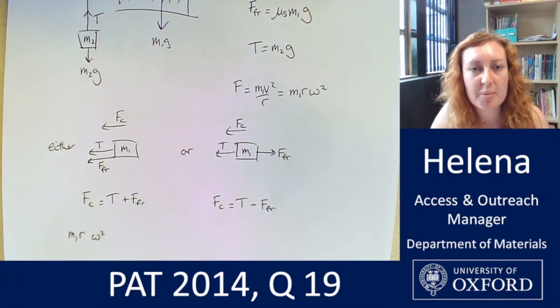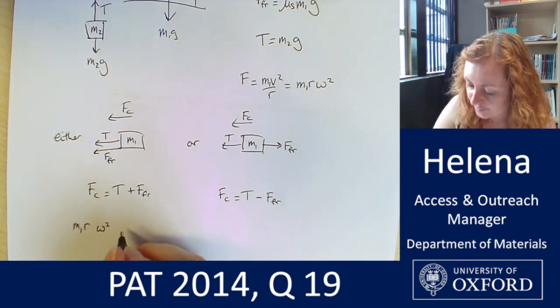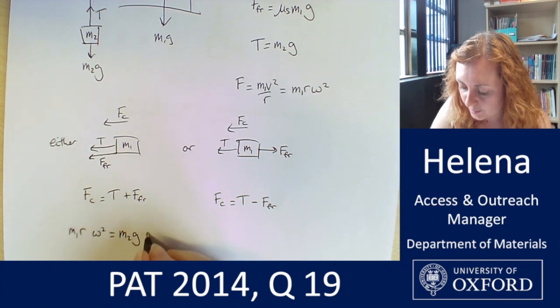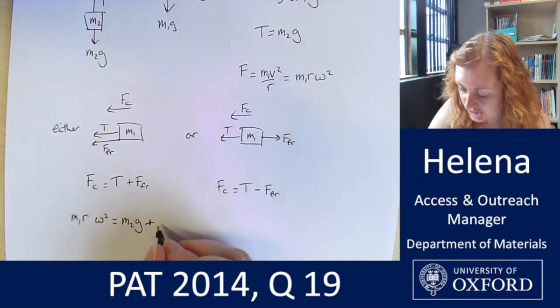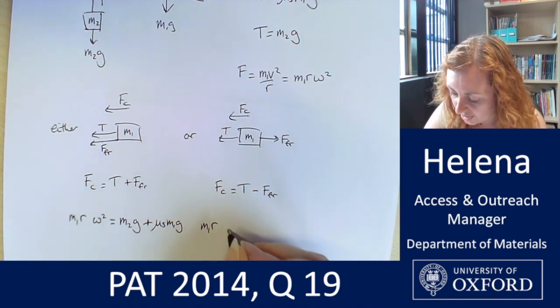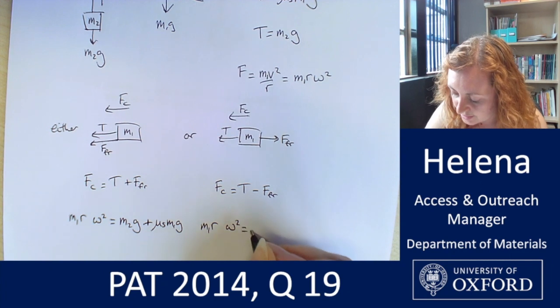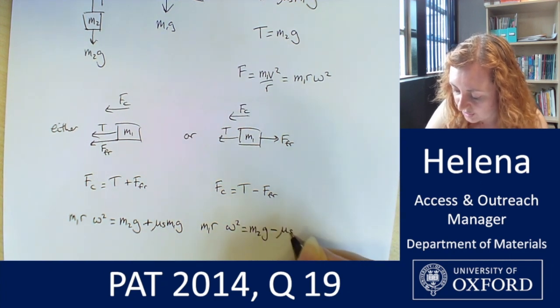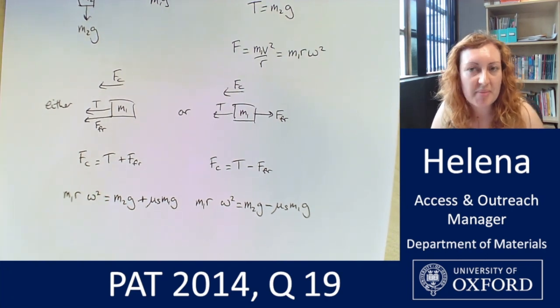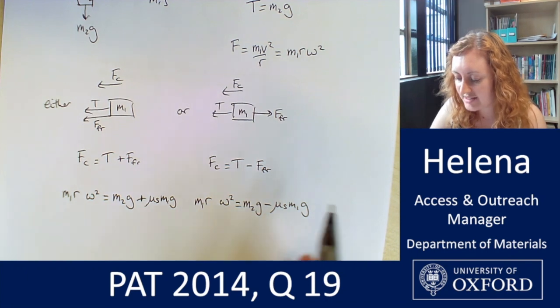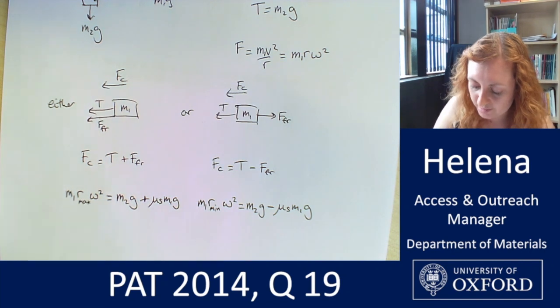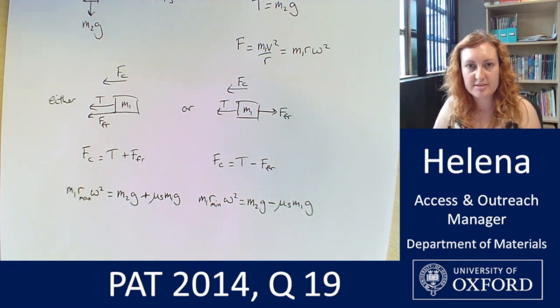I'm going to leave a little bit of a gap while we decide which one's the maximum, which one's the minimum, and then I'll write it in, which is equal to our tension, which is m2 g plus our frictional force, which is the mu_s m1 g. And over here, we have m1 r omega squared is equal to m2 g minus mu_s m1 g. So now you can see why we've got a maximum radius and a minimum radius. So here where we've got the minus sign, we're going to have our minimum, and here we're going to have our max here, where we're summing the two terms.